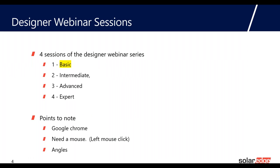We've got a few sessions coming up in our designer training series. Today we'll be going over the basic training: how to start a project, how to create a 3D model, how to select and add PV modules to the property, how to carry out the electrical design, and how to create a summary page report. Today's purpose is to go through slowly, step by step, so you can get used to the program — and we're going to be designing a residential and a commercial system.